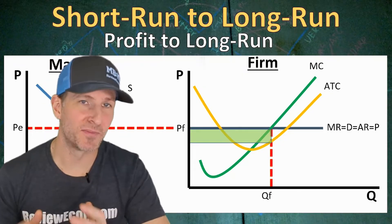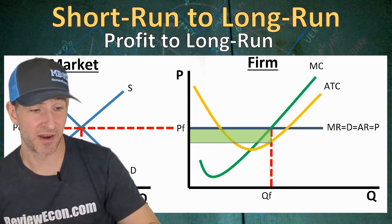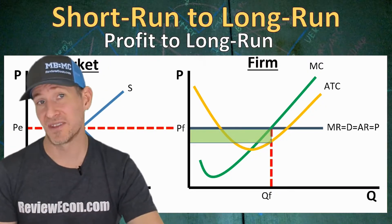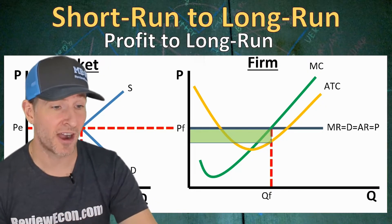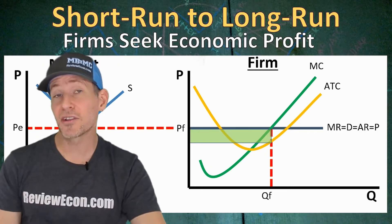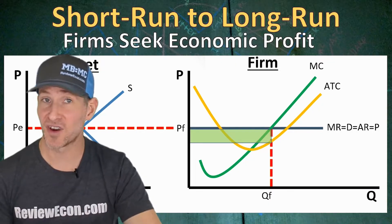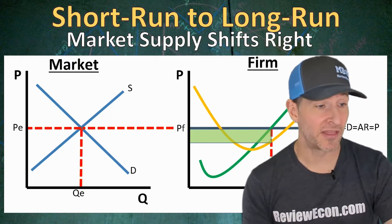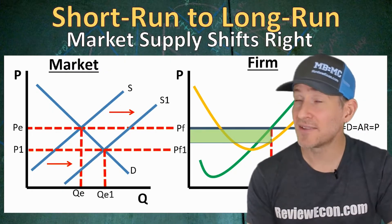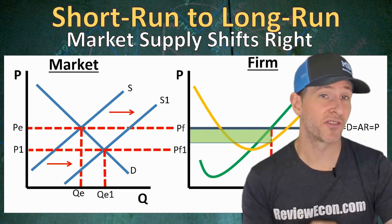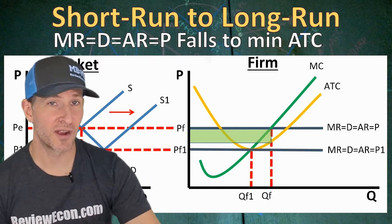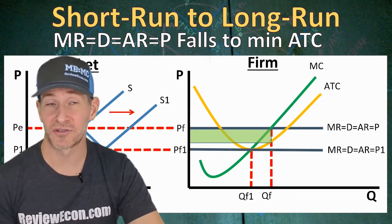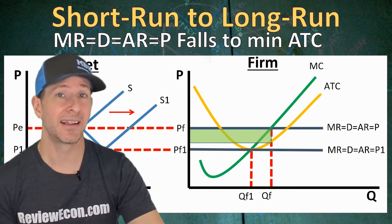Next we're going to talk about how firms move from short-run equilibrium to long-run equilibrium. Here we have a firm earning economic profits — make sure you know these steps on how we get to the long run from this situation. Those economic profits are going to cause other firms to seek that economic profit, meaning firms are going to enter the market to compete. When firms enter the market, the supply within the market is going to shift to the right. That drives down the price within the market, and with it, it lowers the price for the firm. That lower price for the firm shifts the marginal revenue, demand, average revenue, and price downward until it equals the minimum of the average total cost curve, and the firm produces at a lower level of output and breaks even in the long run.